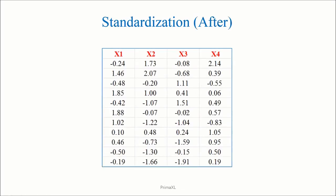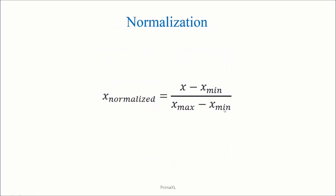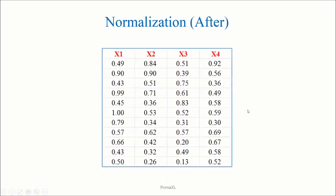Standardization means subtracting the column average from each value and then dividing by the standard deviation. After the standardization, the dataset looks like this — now the columns have the same scale and center. Another way of matching the scales of the variables is the so-called normalization. From each value, the column minimum is subtracted and then divided by the difference between the maximum and the minimum of the column. After the normalization, all the values lie between 0 and 1.